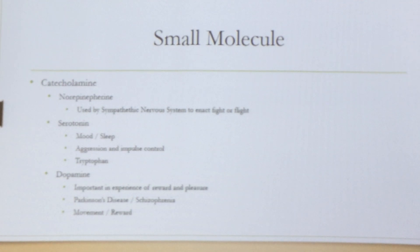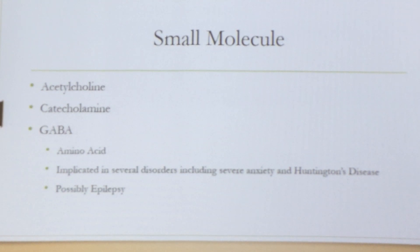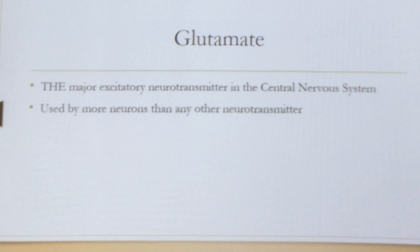Studies show that with Parkinson's, people have a deficit in dopamine, and you'll see the typical Parkinsonian movements. Whereas those who have schizophrenia have too much dopamine, which increases a lot of the type of activity movements. Then we have what's called GABA — it's an amino acid, very important, and they think there's a possible link to epilepsy. Glutamate is the major excitatory neurotransmitter in the central nervous system, used by more neurons than any other neurotransmitter.